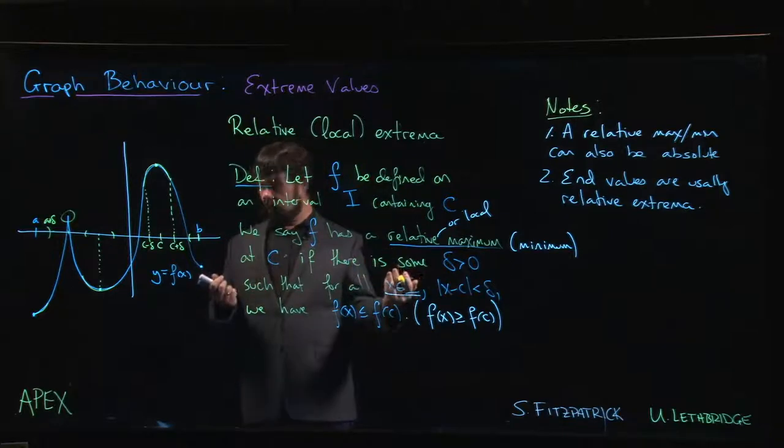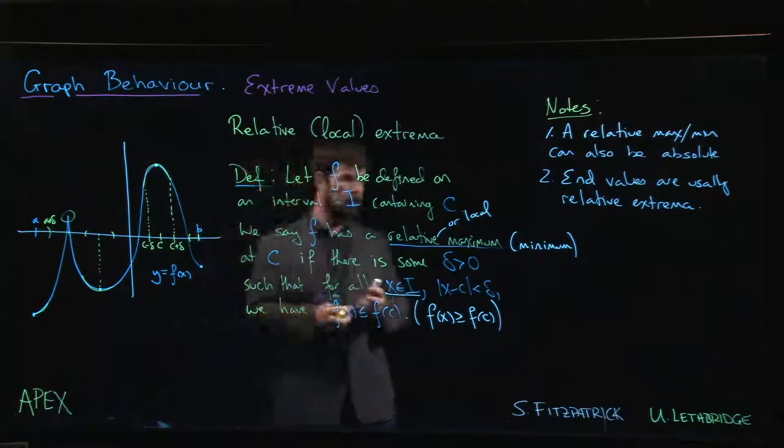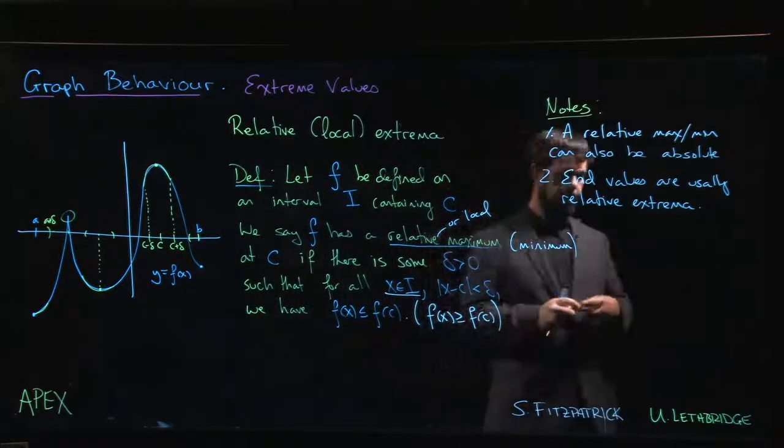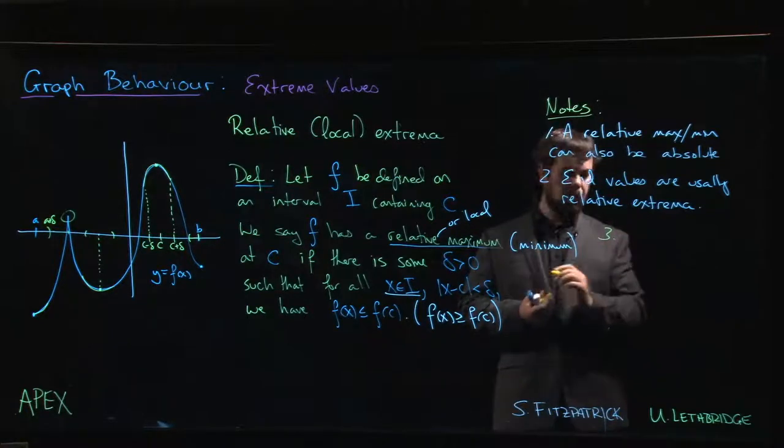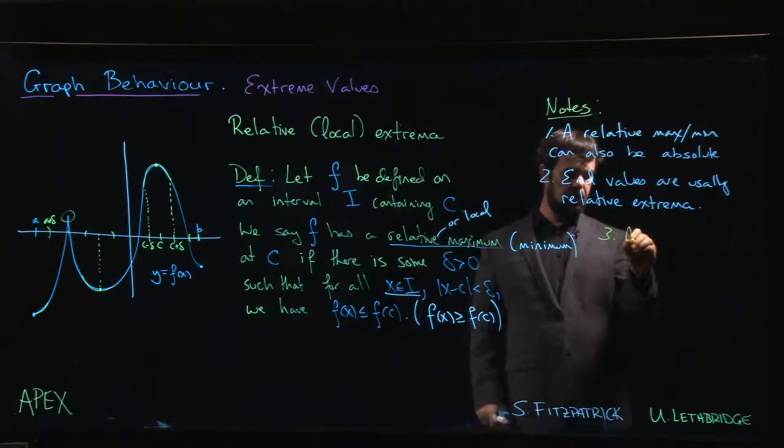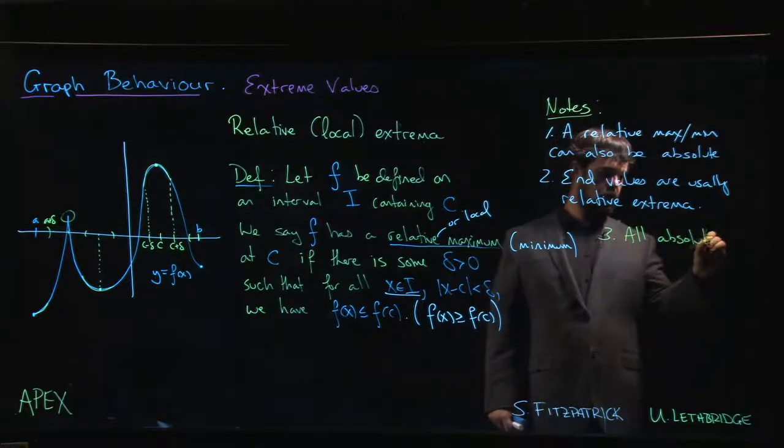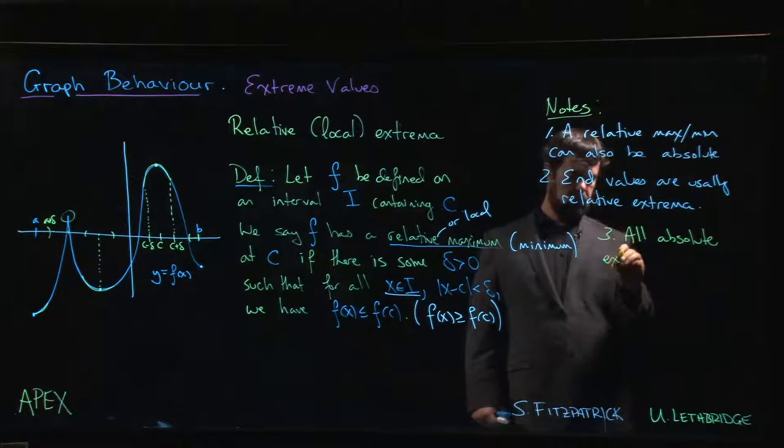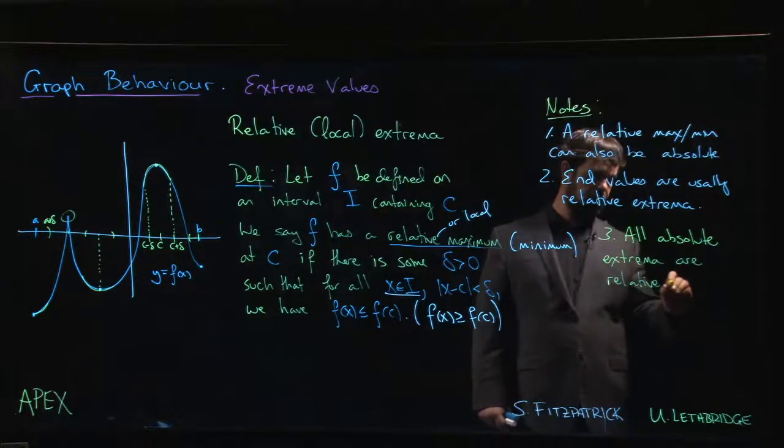So those endpoint values will count as relative extreme values as well. So in fact, combining one and two, we get number three, which is that all absolute extrema are going to be relative extrema.